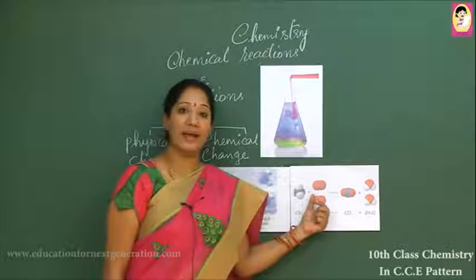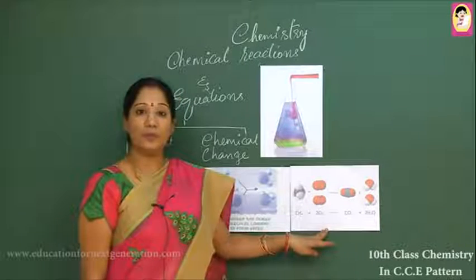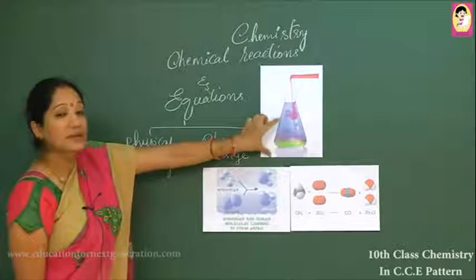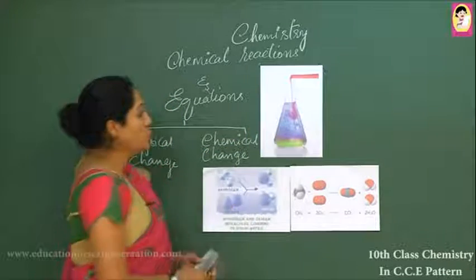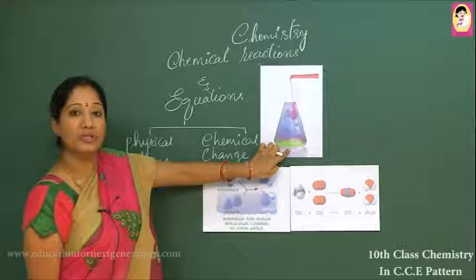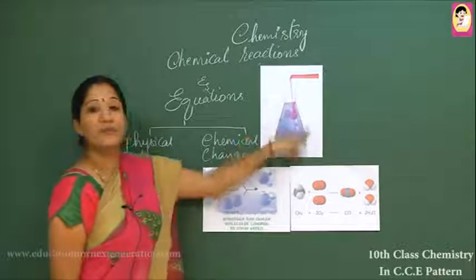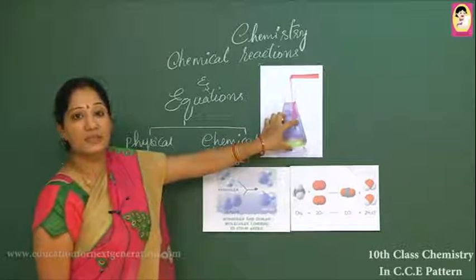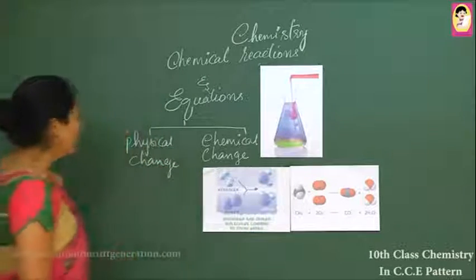Another example: methane gas reacts with oxygen gas and a new component — carbon dioxide and water — is obtained. In simpler terms, consider a pink color solution reacting with a green color solution — it gets converted to a purple color solution. The color change here is a physical change; no new component is obtained. In a chemical change, new components are obtained, whereas in a physical change, no new component is obtained.